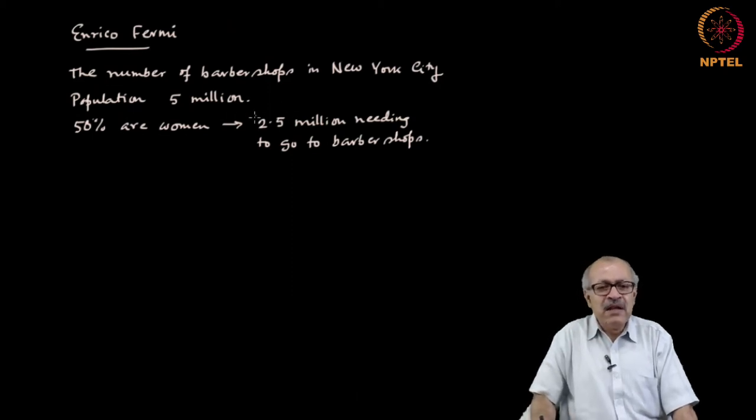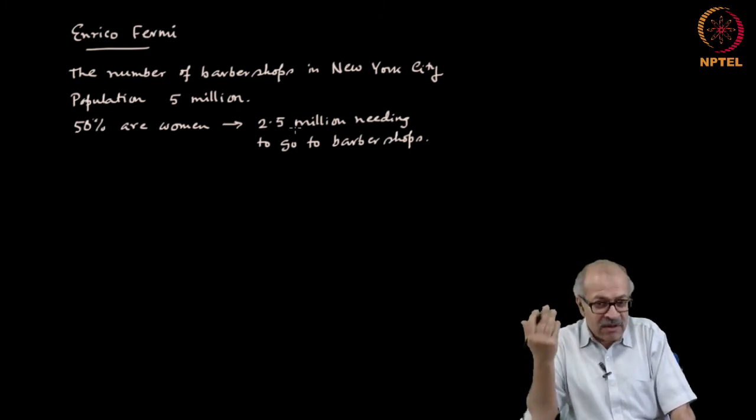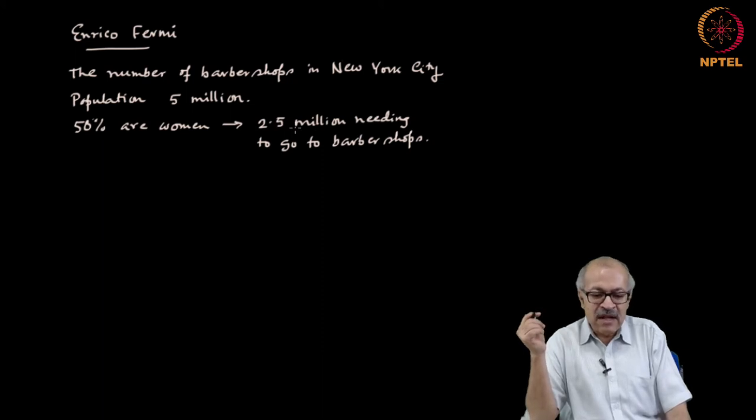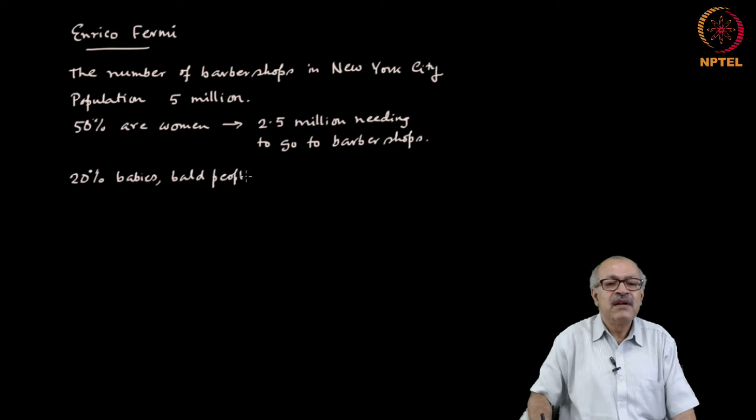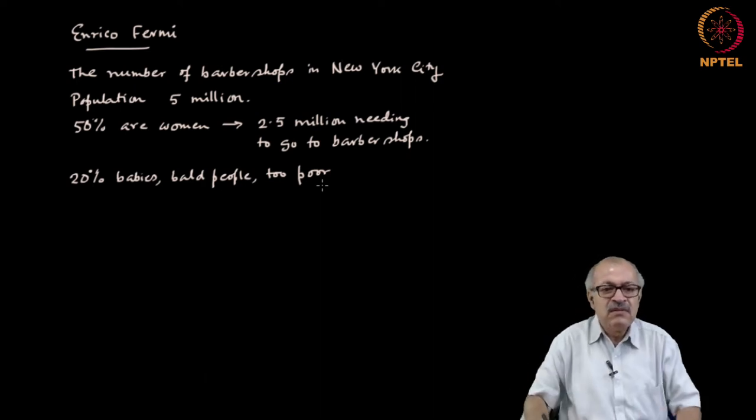Then out of this 2.5 million, some will be babies too small to need a haircut, some will be bald and therefore they would not need a haircut, and likewise there might also be some people who cannot afford a haircut, so poor that they cannot afford a haircut. So suppose the number of such people, maybe say 20 percent. So 20 percent do not need a haircut—babies, bald people. That brings the number down to about 2 million.